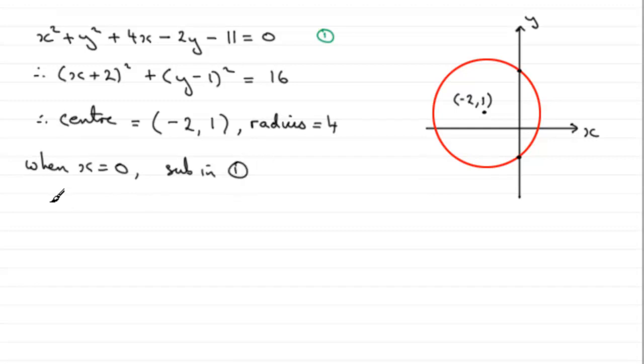What we have is that the first term obviously goes, and we're left with y squared, and then the 4x goes, 4 times 0 is 0, minus 2y, and then minus 11 equals 0. And what we've got here is a quadratic equation.